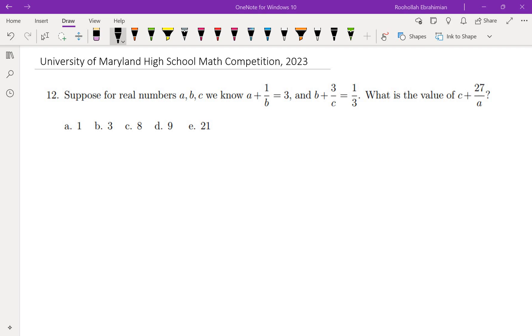We are going to go over problem number 12, and in the next few videos I'm going to go over some more problems from this competition. Suppose for real numbers a, b, c we know these two relations. We want to find the value of c plus 27 over a.